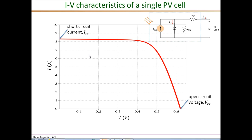As the voltage begins to increase, the diode current increases slowly at first, resulting in a corresponding reduction in output current. Beyond a certain voltage — around 0.45 volts in this example — the diode current rises at a very rapid rate, and the output current therefore also decreases at the same rapid rate. The voltage at zero current, or at open circuit, is called the open circuit voltage VOC.